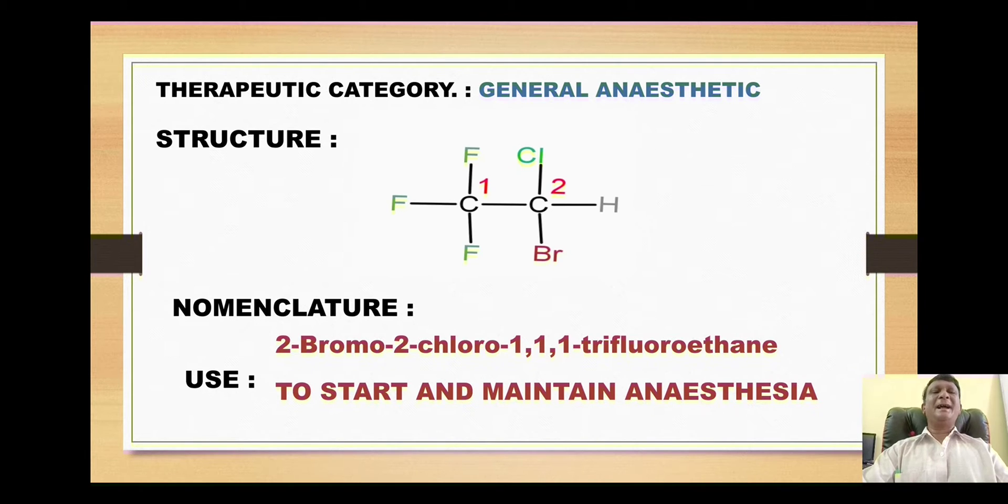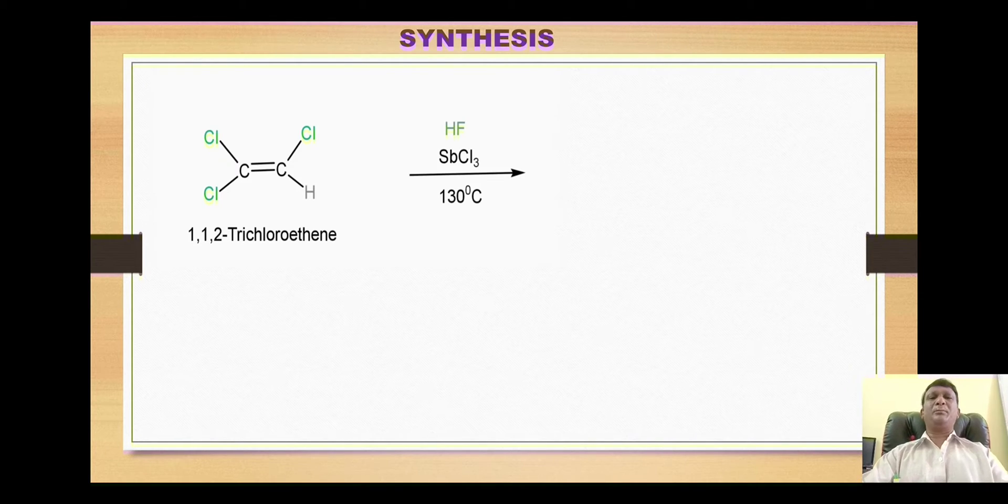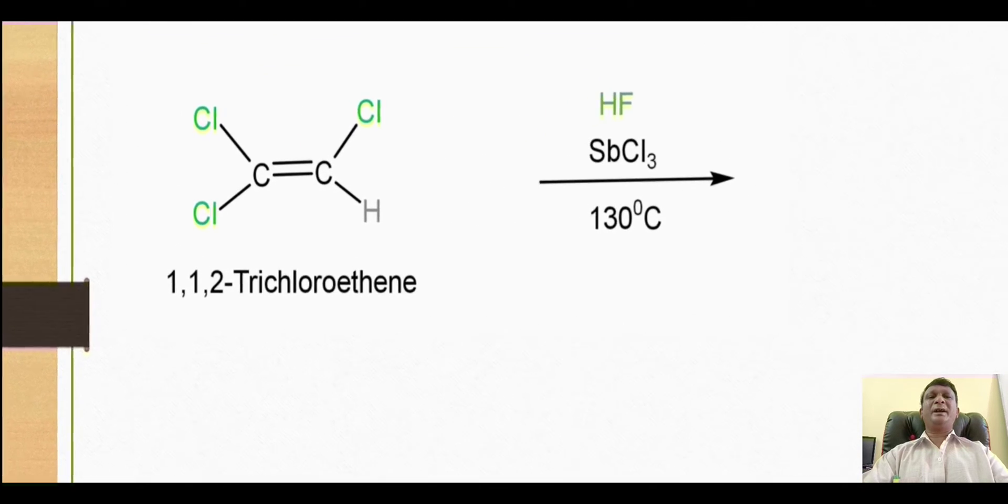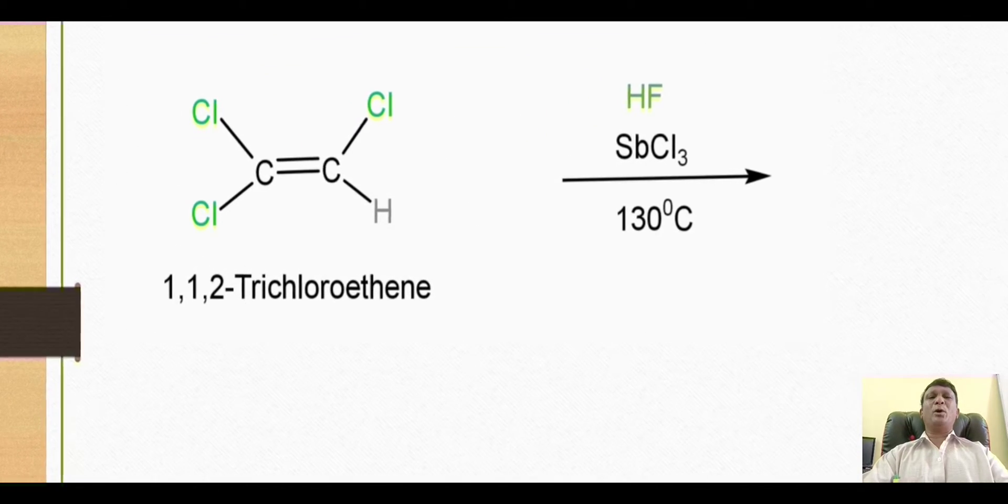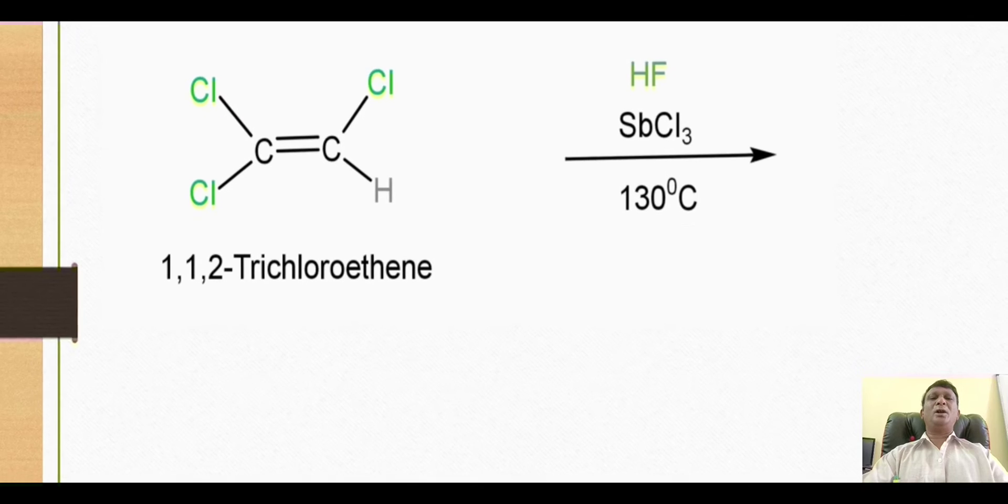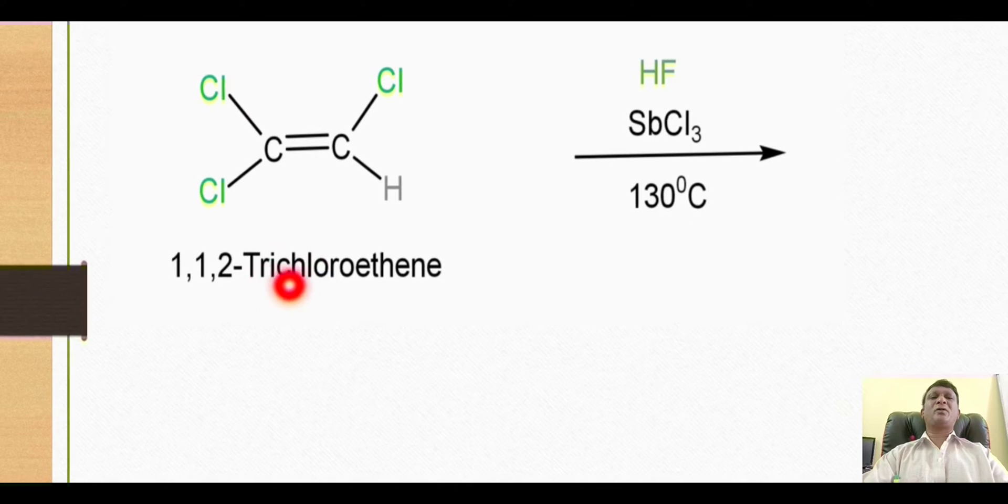Now the synthesis of this compound starts with this ethene molecule which is called 1,1,2-trichloroethene. It reacts with hydrofluoric acid in presence of antimony trichloride at a temperature of 130 degrees centigrade.